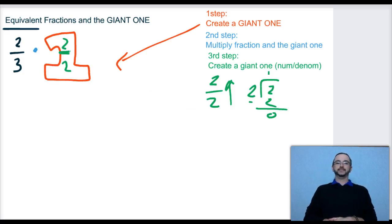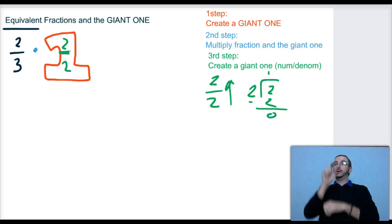Now, you can use any giant one that you want. It's always going to work. You're always going to create an equivalent fraction if you use the giant one. So pick whatever numbers you want. Just make sure that the numerator and the denominator are the same number, because you want to get that value of 1.